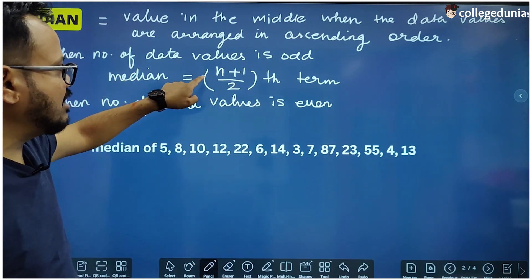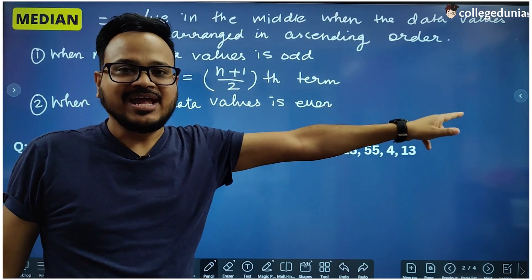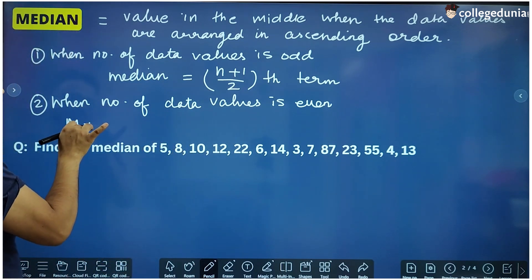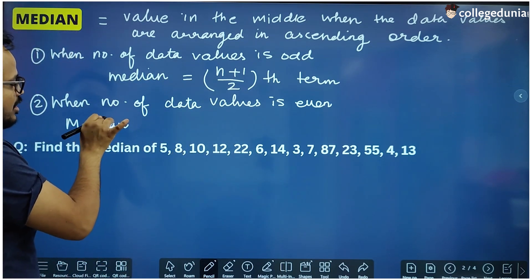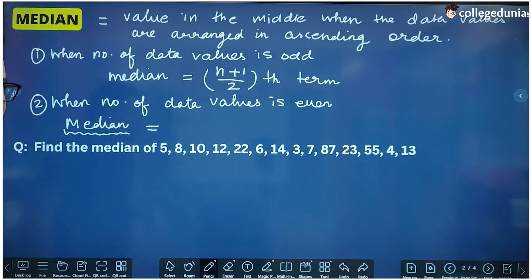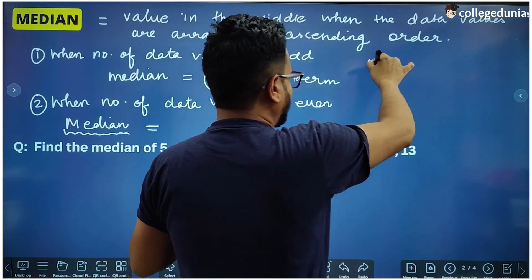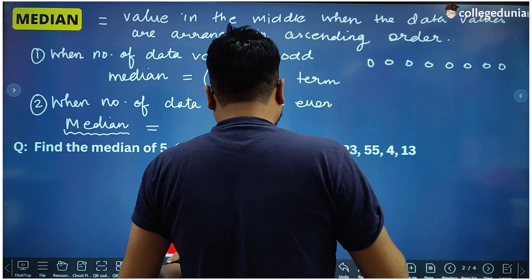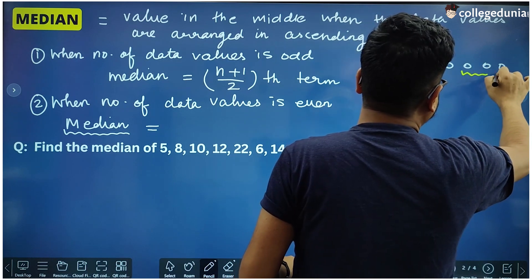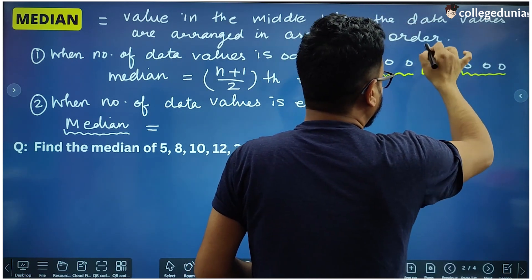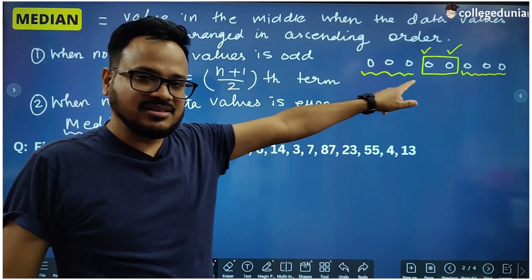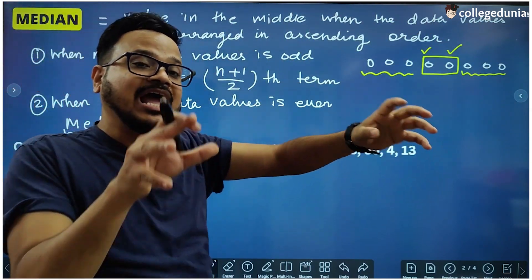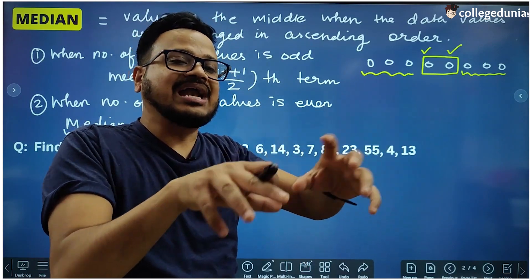For example, when n was 7: 7 plus 1 is 8, divided by 2 is 4 — so the fourth term is the median, which is correct. But when the number of data values is even, the median is the average of the two middle values. Taking n = 8: n/2 = 4, and n/2 + 1 = 5. So we take the 4th and 5th values and find their mean.